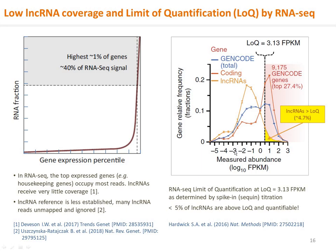To quantify the lower lncRNA abundance distribution in FPKM — fragments per kilobase per million reads — the lncRNA distribution (orange curve) is compared with mRNA (red curve). The minimum counts needed to quantify RNA, the limit of quantification or LOQ, has been experimentally determined to be 3.13 FPKM as published in Nature Methods. For mRNAs, the majority is above the LOQ, which is acceptable. For lncRNAs, the quantifiable fraction represents less than 5% of the total lncRNA population, which is poor.